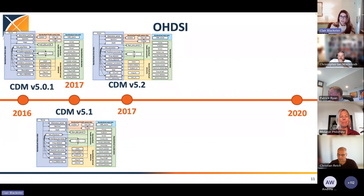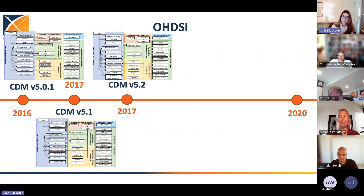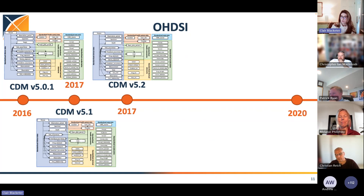We had a backlog of issues of things people had noted, saying things like, 'I think we could change this here,' or 'This is missing, can we update this?' So starting in 2016, we really made a lot of changes. We went quickly from version 5.0 to version 5.2 in 2017.